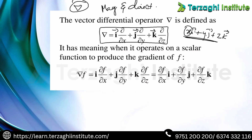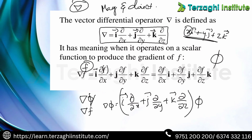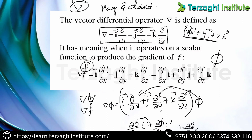Now for a scalar function φ (also written as f), we apply the del operator. Del operator is (i·∂/∂x + j·∂/∂y + k·∂/∂z). Multiplying by the scalar φ gives: del·φ = (∂φ/∂x)i + (∂φ/∂y)j + (∂φ/∂z)k.